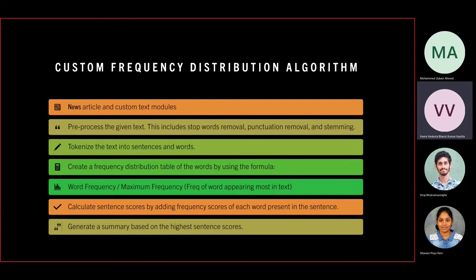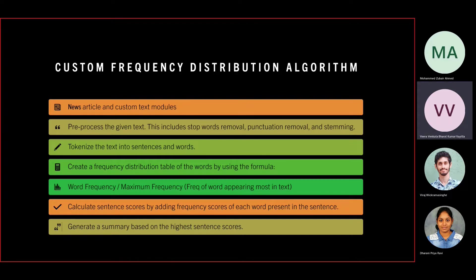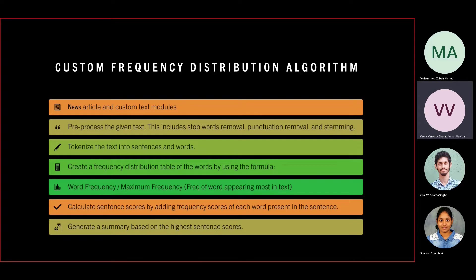The algorithm will first preprocess the given text, which includes stop word removal, punctuation removal, and stemming. Next, it tokenizes the text by dividing it into sentences and words. Then it creates a frequency distribution table of the words using the formula: word frequency divided by maximum frequency. Sentence scores are calculated by adding the frequency scores of each word present in the sentence, and the summary is generated using the highest sentence scores.